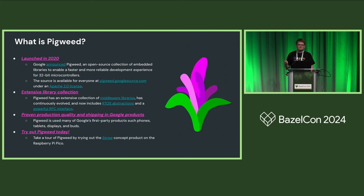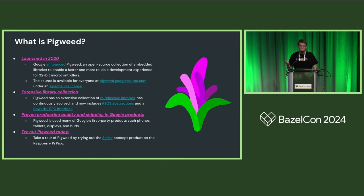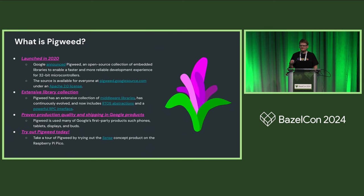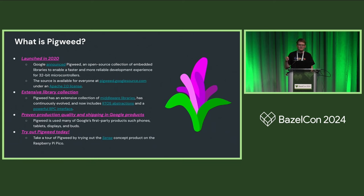Pigweed launched in 2020 as an open source offering originally produced by Google for accelerating embedded development. Pigweed is a collection of libraries, a collection of developer tools, and a way of thinking about how to make embedded applications. It has been shipping in Google products since before its public launch — in Google phones, tablets, displays, and buds. I particularly recommend the Sense concept product that uses the Raspberry Pi Pico.